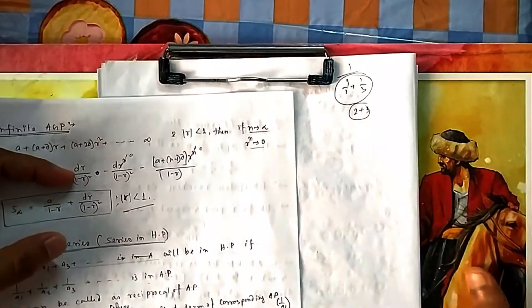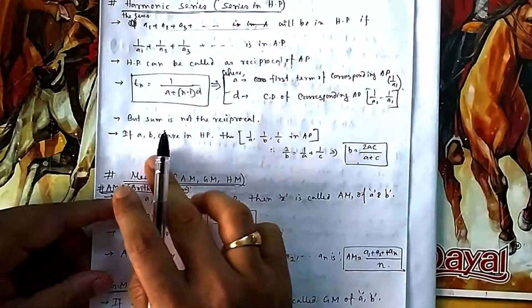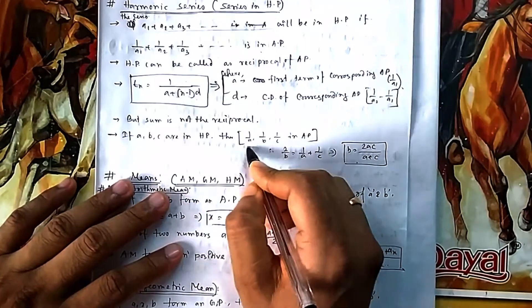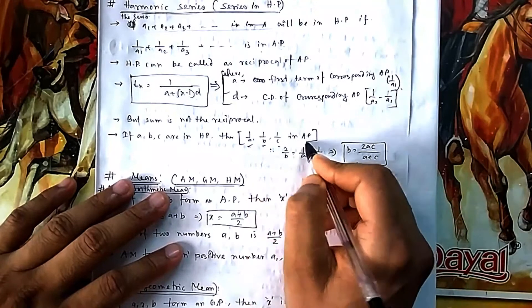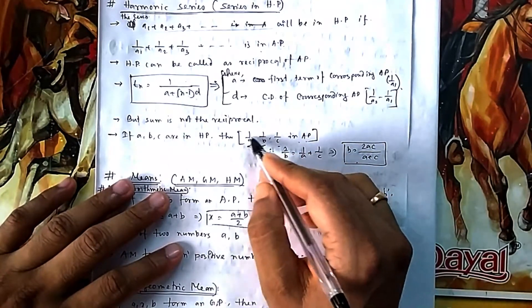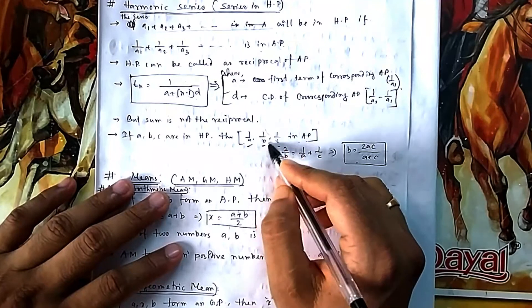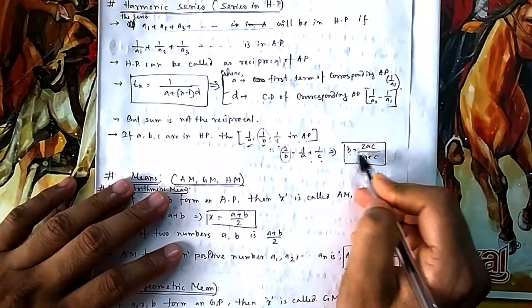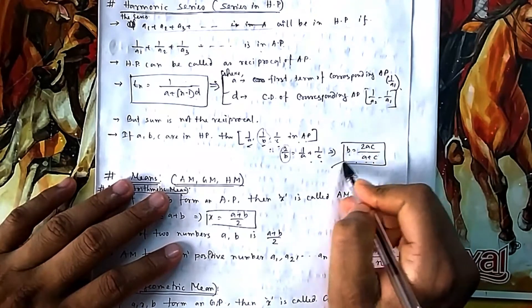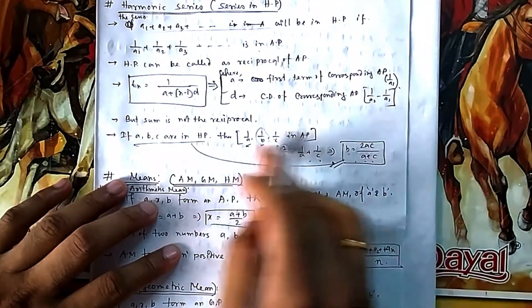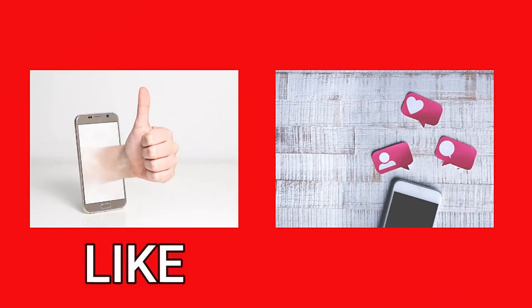If a, b, c are in HP, then 1/a, 1/b, 1/c are in AP. Since three numbers in AP satisfy 2b = a + c, applying this to the reciprocals gives the condition: b = 2ac/(a+c). This is the standard condition for three numbers to be in HP, and conversely, if this holds, they are in HP.